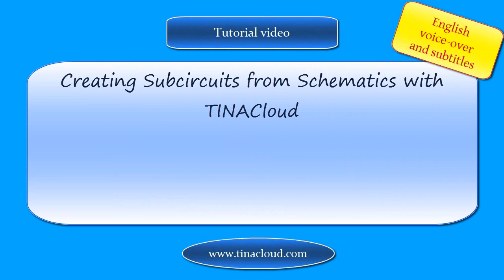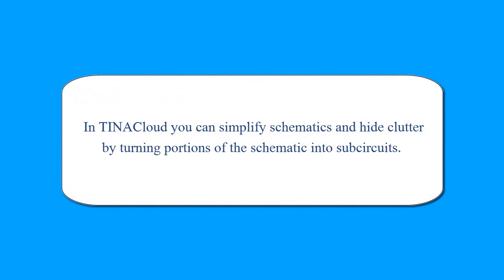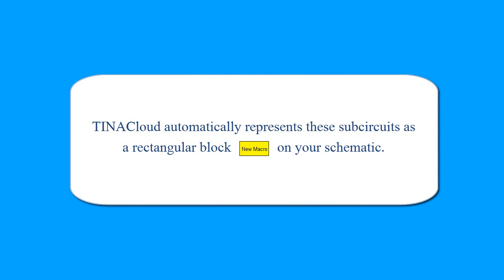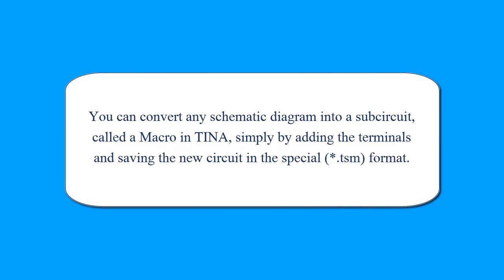Creating Subcircuits from Schematics with TINA Cloud. In TINA Cloud, you can simplify schematics and hide clutter by turning portions of the schematic into subcircuits. TINA Cloud automatically represents these subcircuits as a rectangular block on your schematic. You can convert any schematic diagram into a subcircuit, called a macro in TINA, simply by adding the terminals and saving the new circuit in the special asterisk.tsm format.